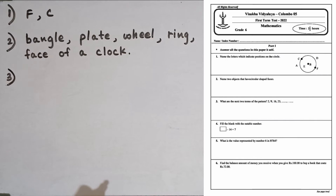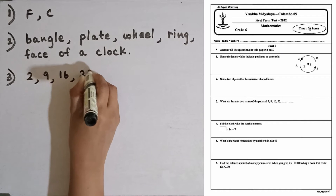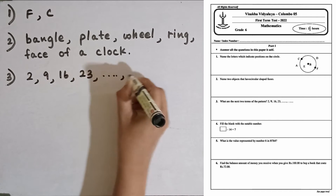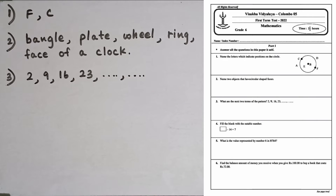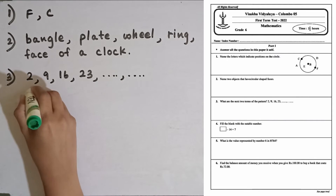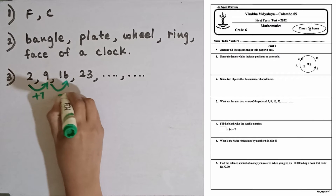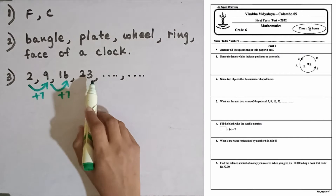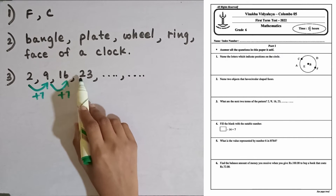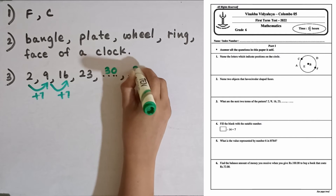Question number three: what are the next two terms of the pattern 2, 9, 16, 23? Let's find the relationship between each two consecutive terms. 2 plus 7 is 9, then 9 plus 7 is 16. So to find the next two terms we have to add 7 to the last term. 23 plus 7 is 30, then 30 plus 7 is 37.